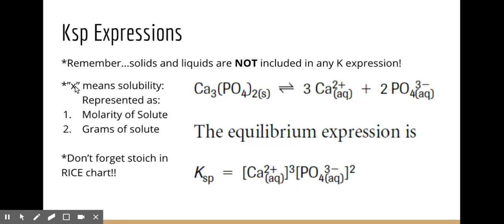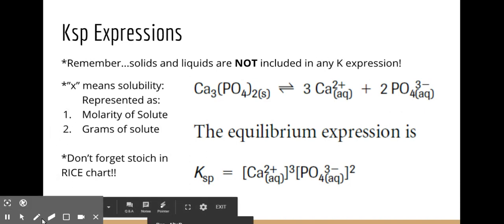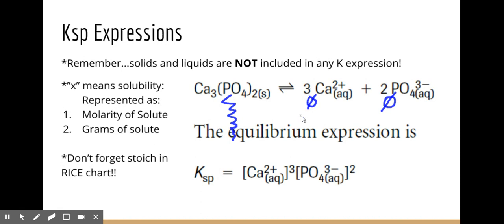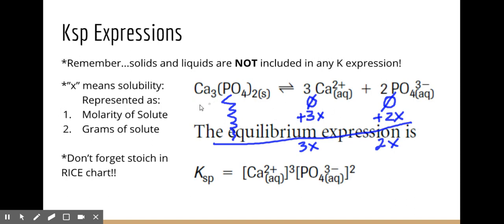Similar to KC expressions, when we solve for X using a RICE chart, solids do not appear in the RICE chart at all. Initially, you always have zero for your product ions. The change row uses the coefficients, so you'd get plus 3x for one ion and plus 2x for another. The only difference is that the solid is not included in any part of my RICE chart or K expression.